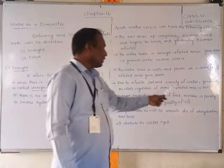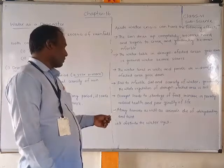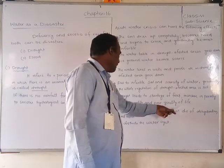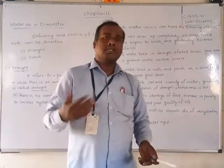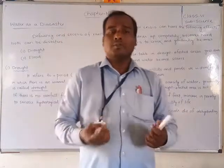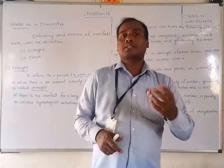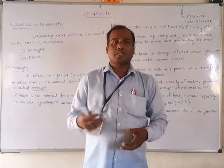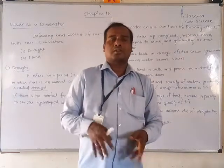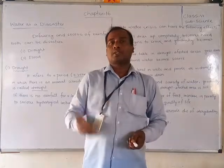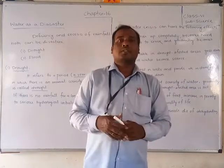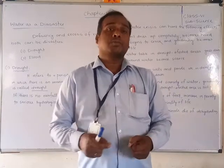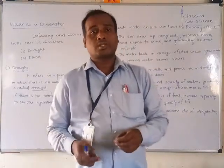Drought leads to a shortage of food, increasing poverty, reduced health, and poor quality of life. If there is drought, there is a shortage of food because if there is no agriculture, food production decreases. Crops cannot develop in the drought-affected area, so agriculture fails and the area faces a shortage of food.